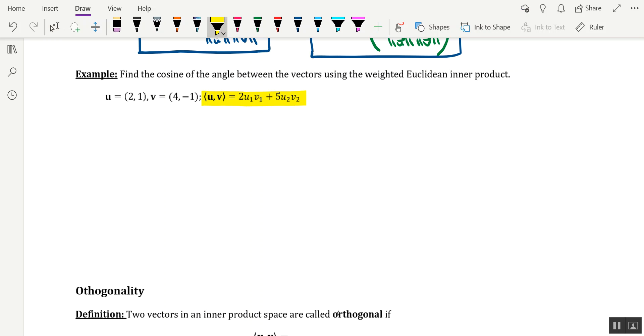Alright, so in the previous video, we saw that cosine theta is equal to the inner product of the two vectors divided by the product of each of their norms. So in order to find the cosine of the angle between the vectors, we're going to need three ingredients. First being the inner product, second being the norm of u, and then the third thing being the norm of v.